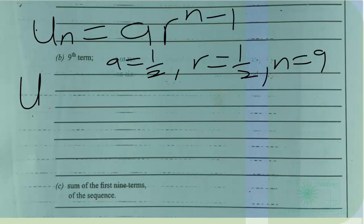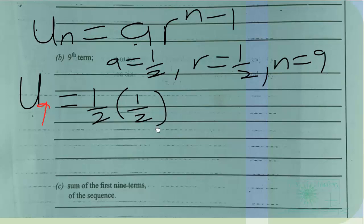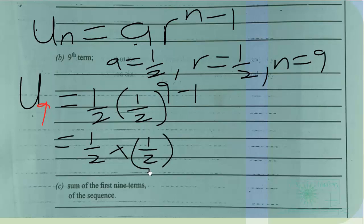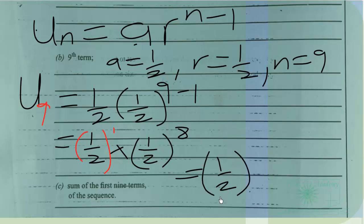So u_9 = (1/2) × (1/2)^(9−1) = (1/2) × (1/2)^8. Since 1/2 is the same as (1/2)^1, using the laws of indices we add the exponents: 1 + 8 = 9. Therefore u_9 = (1/2)^9 = 1^9 / 2^9 = 1/512.